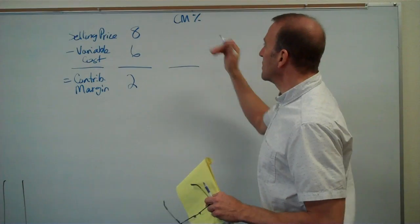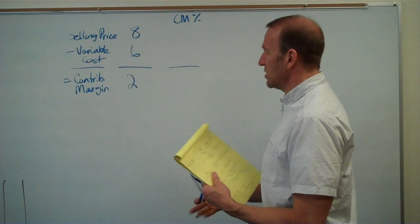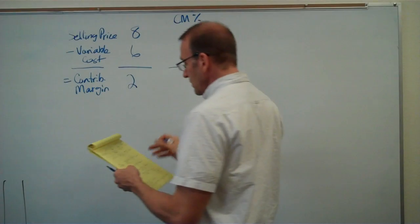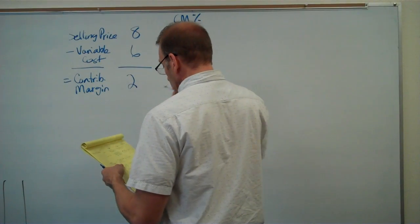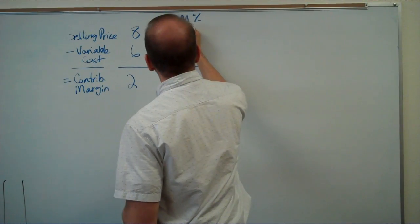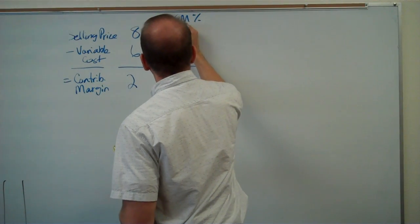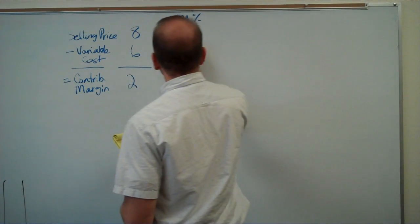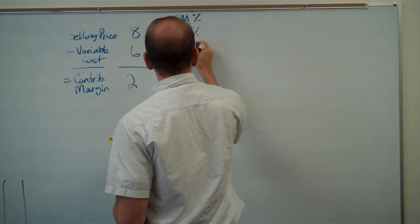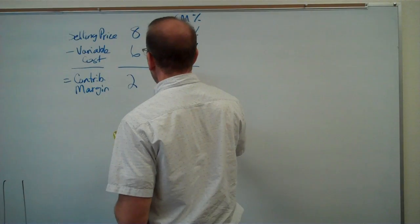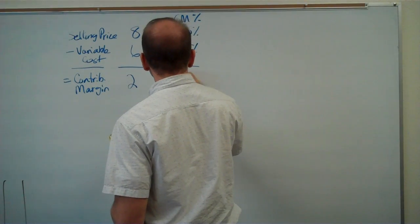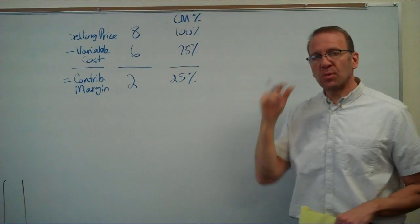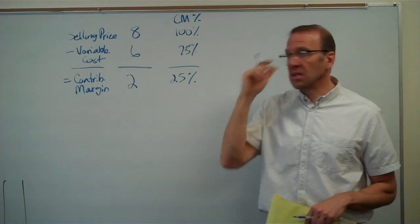We can also express this as a percentage of the sales price. Sales price is 100% (8 divided by 8). Variable costs are 75% (6 divided by 8). Our contribution margin percentage is 25%, and we're going to use these percentages in just a little bit.